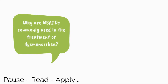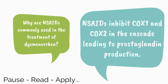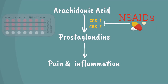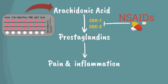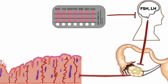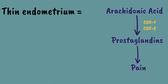Why are NSAIDs commonly used in the treatment of dysmenorrhea? NSAIDs inhibit COX-1 and COX-2 in the cascade leading to prostaglandin production. COX-1 and COX-2 are involved in the production of prostaglandins from arachidonic acid. Inhibiting COX-1 and COX-2 with NSAIDs thus decreases prostaglandin formation. Hormonal suppression, another first-line treatment for dysmenorrhea, also decreases prostaglandin production at the level of arachidonic acid. Hormonal suppression, such as with oral contraceptive pills, inhibits gonadotropin release, which suppresses hormonal stimulation and proliferation of the endometrium, resulting in endometrial atrophy. A thin endometrium contains relatively small amounts of arachidonic acid, decreasing the amount of prostaglandins.